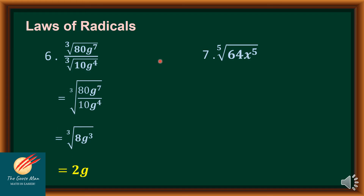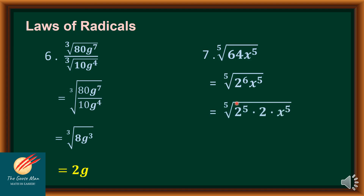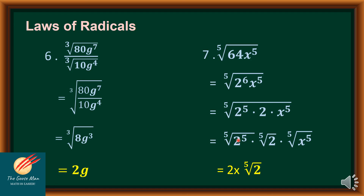Next: the fifth root of 64x to the fifth power. I express 64 as 2 to the sixth power, giving the fifth root of 2 to the sixth power times x to the fifth power. I expand this as the fifth root of 2 to the fifth power times 2 times x to the fifth power. Simplifying, the fifth root of 2 to the fifth power is 2, the fifth root of x to the fifth power is x, and I copy the fifth root of 2, giving a final answer of 2x times the fifth root of 2.